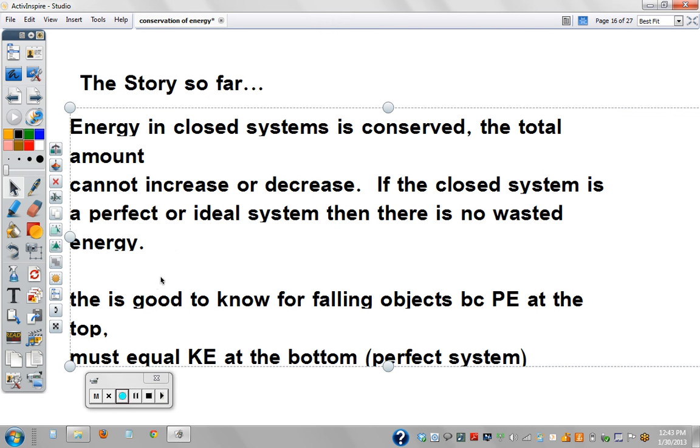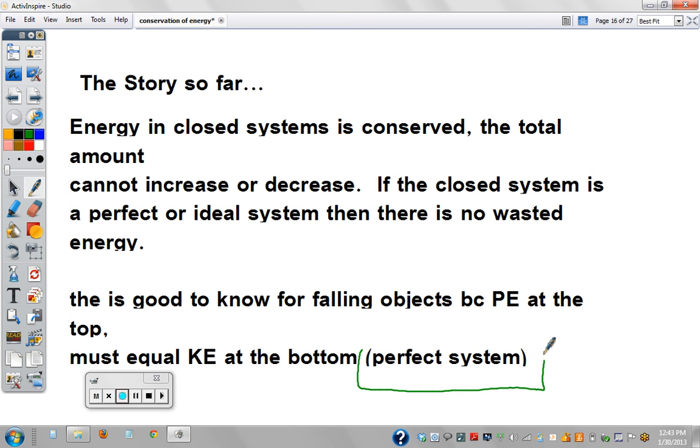This is good to know for falling objects, because potential energy at the top must equal kinetic energy at the bottom. And this is if we're ignoring air resistance and friction. That's what a perfect system is. These things are all from Topic 10.